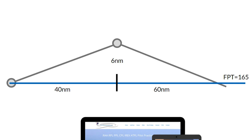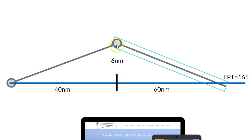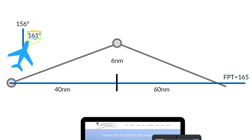When they give you a question, they're going to give you certain information first: how far you have flown, what your original flight plan track was, and when you get to a certain point, how far off track you are. The other thing you'll know if you're actually flying is your heading.